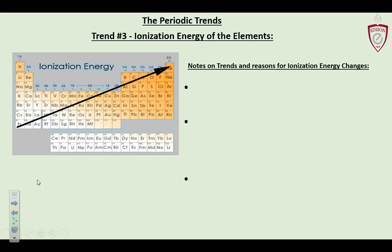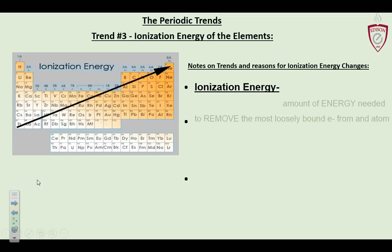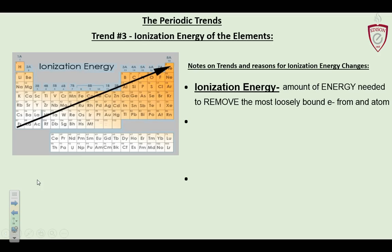So now, ionization energy. If I'm going to make an ion, I'm going to lose an electron — this is positive ionization energy. It's how much energy it takes to remove one electron, creating a positive ion. In Table S it's called first ionization energy, because it's that first electron — not the second or third afterwards. Just how much energy it takes to remove one.